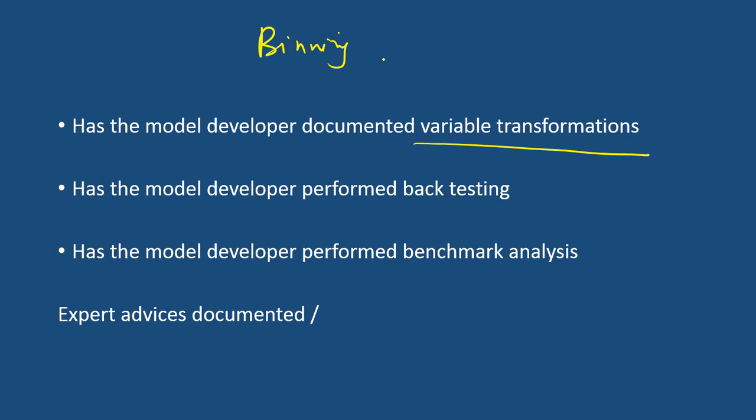Variable transformation documentation is very important because all these transformations have to be performed in production. Any discrepancy between the modeling transformation and the production transformation can lead to disastrous, catastrophic results, especially in banking and financial service organizations. That model documentation should be in the model document and as a validator one should ensure it is in place.